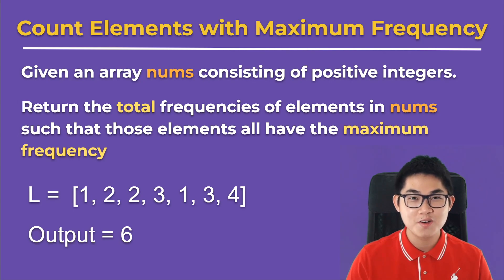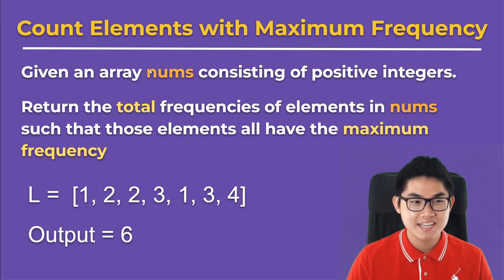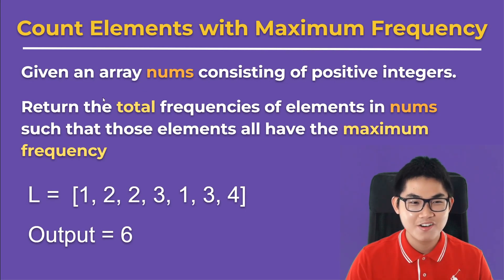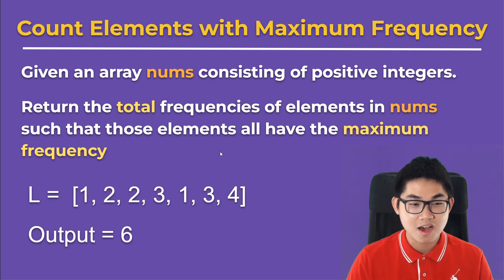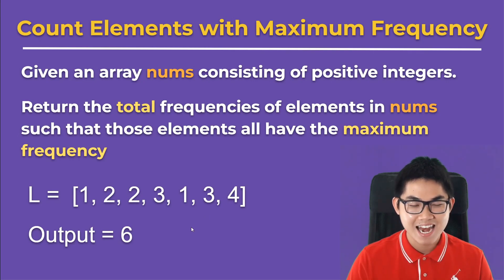In this video we're going to solve the LeetCode problem 'Count Elements with Maximum Frequency.' This problem says: given an array nums consisting of positive integers, return the total frequencies of the elements in nums such that those elements all have the maximum frequency. For example, given a list of [1, 2, 2, 3, 1, 3, 4], the output should be six, and I'm going to explain why.